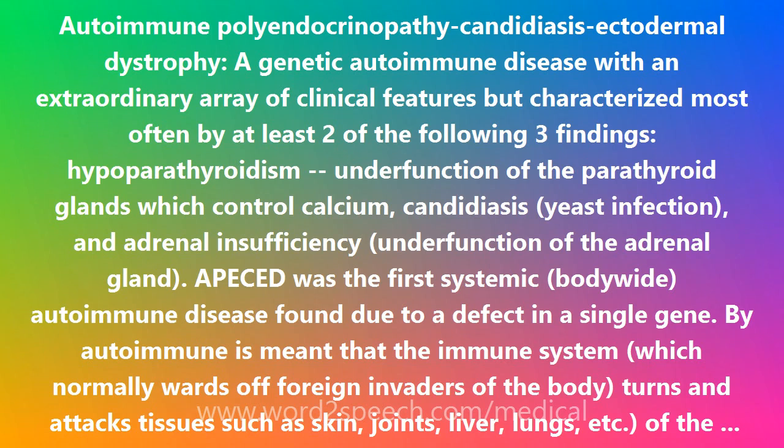By autoimmune is meant that the immune system, which normally wards off foreign invaders of the body, turns and attacks tissues such as skin, joints, liver, lungs, etc., of the body.